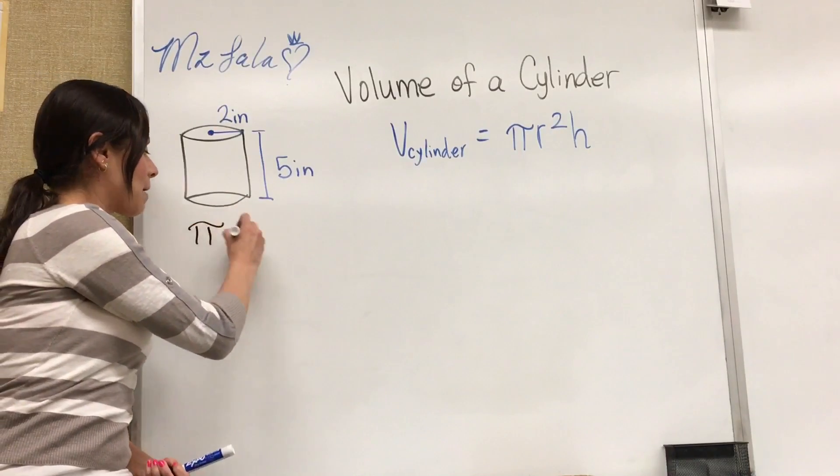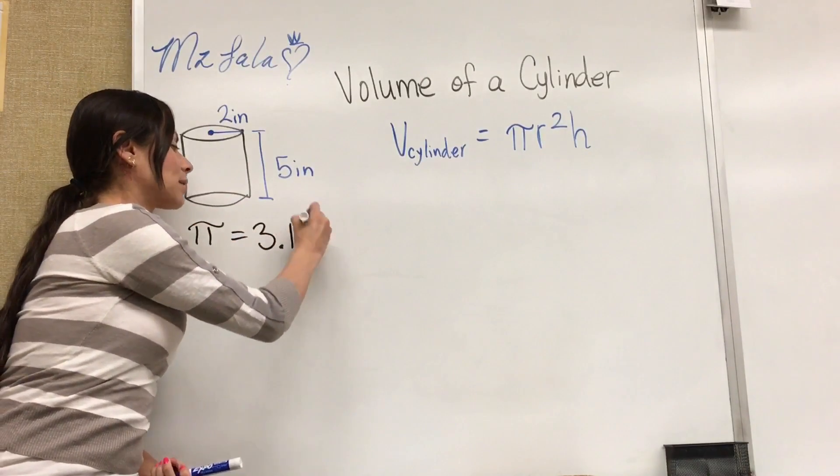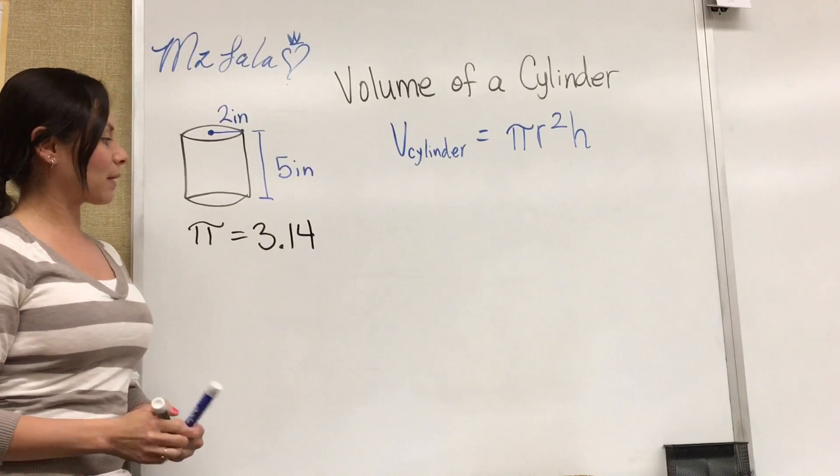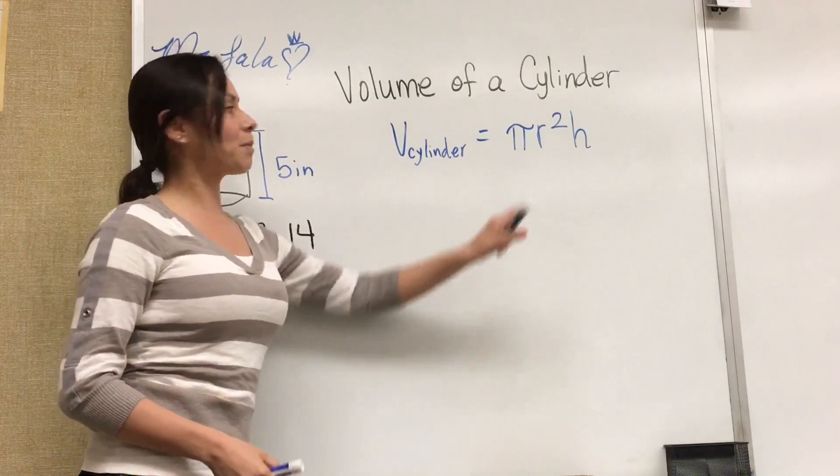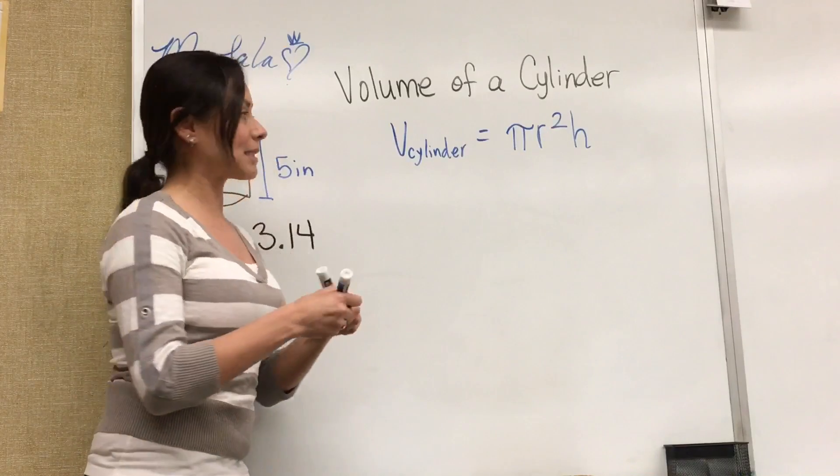In case you remember what pi is, pi is approximately 3.14 so we're going to be using that. So to find the volume of a cylinder the formula is pi times r squared times height.